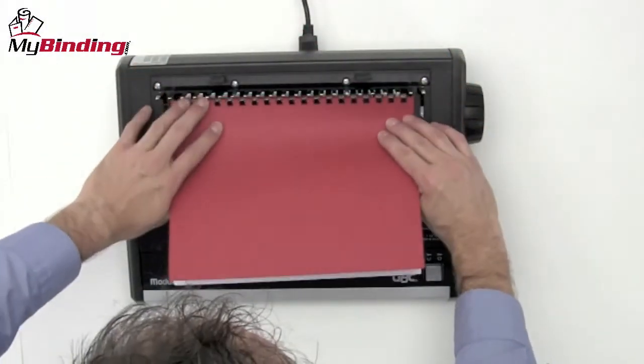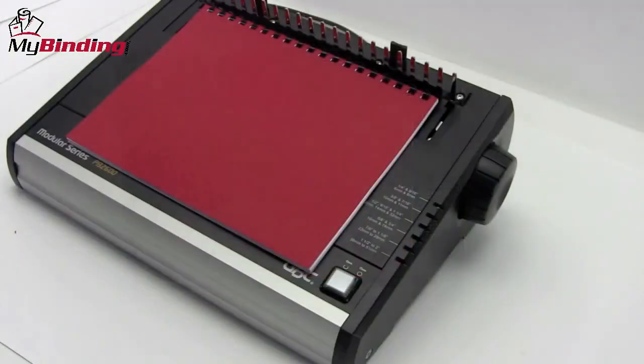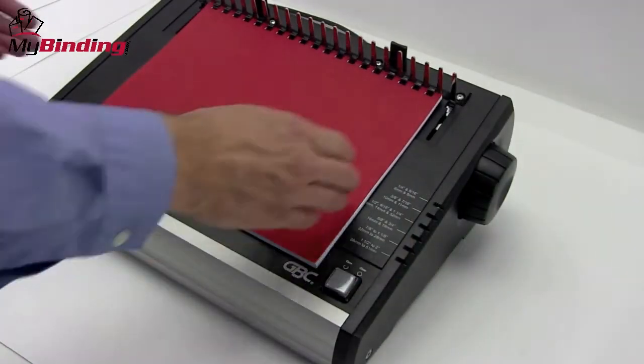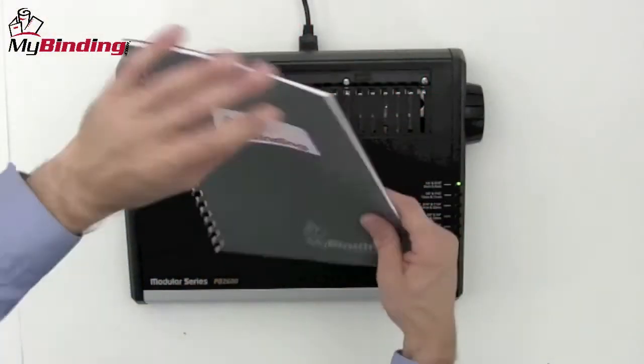Then, drape your project over the teeth of the comb, ensuring that they all get through nice and flat. Push the button and hold it, it closes up the comb, and your book is all finished.